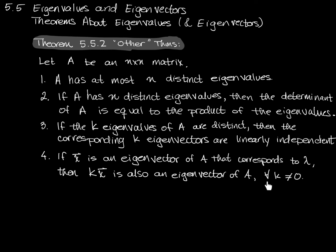This notation — an upside-down capital A — is one we haven't seen before, but it means 'for all' or 'for every.' So that symbol is equivalent to saying 'for every k that's not zero' — any value of k as long as it's not zero.